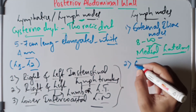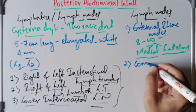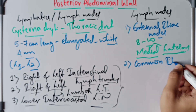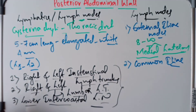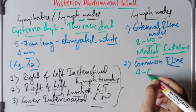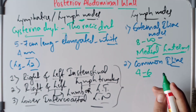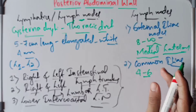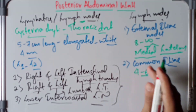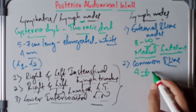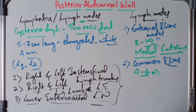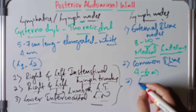The common iliac nodes are 4 to 6 in number and lie along the common iliac vessels. The lateral group of nodes receives lymph from the pelvis and the lower limb via the external iliac nodes.